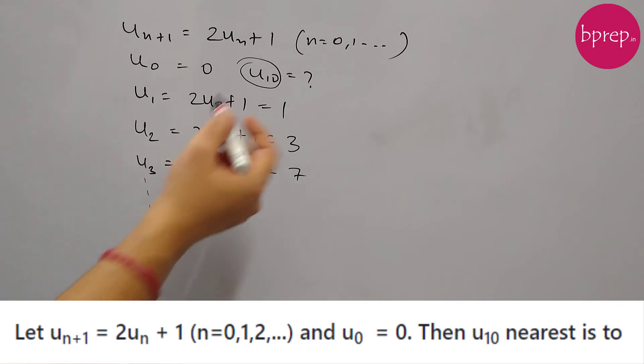But this approach has a problem. What if in the question we need to find out u_15 or u_20? We cannot go on calculating all those numbers and even the calculation will take some time. So we should be able to figure out the pattern in this case.